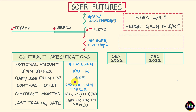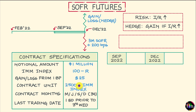Based on the IMM index on any given day, you can also calculate what is called the contract unit for any given three-month SOFR futures contract. The formula is simple: it's 2,500 times the IMM index on any given day.